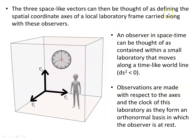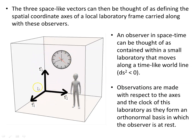The three spacelike vectors can be thought of as defining the spatial coordinates of a local laboratory frame carried along with these observers — the spatial vectors E1, E2, E3. An observer in spacetime can be thought of as contained within a small laboratory that moves along a timelike world line. For the signature metrics used in these videos, ds squared is less than zero for the line element. Observations are made with respect to the axes and the clock of this laboratory, as they form an orthonormal basis in which the observer is at rest — that is their local inertial reference frame.